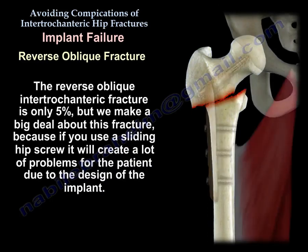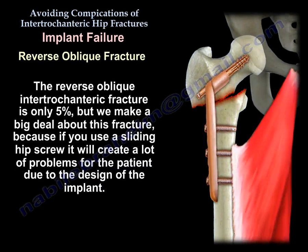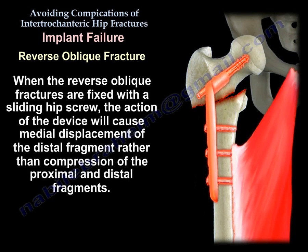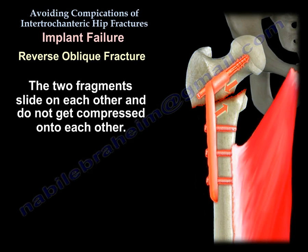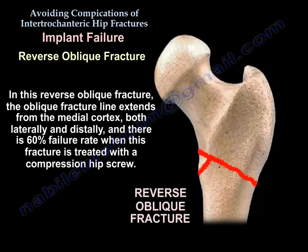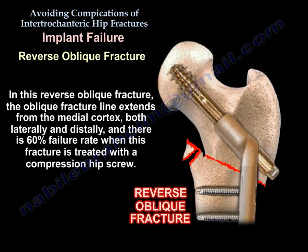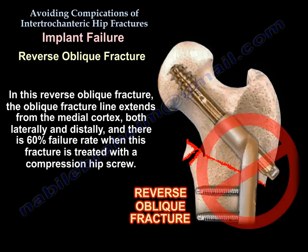The reverse oblique intertrochanteric fracture is only 5% of cases, but it is important because if you use a sliding hip screw, it creates significant problems due to the implant design. The device causes medial displacement of the distal fragment rather than compression of the fragments. The two fragments slide on each other instead of being compressed together. The oblique fracture line extends from the medial cortex laterally and distally, and there is a 60% failure rate when this fracture is treated with a compression hip screw.